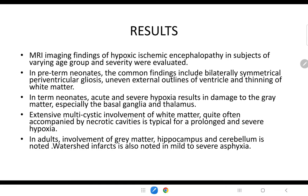The MRI imaging findings of HIE in subjects of varying age groups and severity were evaluated. In preterm neonates, the common findings include bilateral symmetrical periventricular gliosis, irregular external outlines of ventricles, and thinning of white matter. In term neonates, acute and severe hypoxia results in damage to grey matter, especially in the basal ganglia and thalamus. Extensive multicystic involvement of white matter, often accompanied by necrotic cavities, is typical for prolonged and severe hypoxia. In adults, involvement of grey matter, hippocampus, and cerebellum is noted. Watershed infarcts are also noted in mild to severe asphyxia.